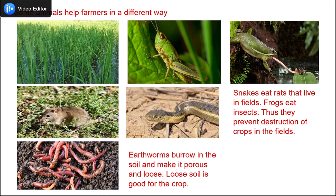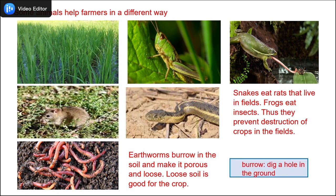Another important friend of the farmer is the earthworm. Earthworms burrow in the soil and make it porous and loose — porous means it becomes airy. Loose soil is good for the crop. We learn a new word: burrow means to dig a hole in the ground.